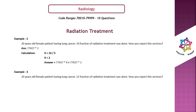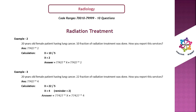Example 3: 22 fractions of radiation treatment. The answer is 77427 × 4. Calculation: x = 22 ÷ 5 = 4, remainder = 2. Since the remainder is 2 (less than 3), retain x as same. Answer = 77427 × 4.